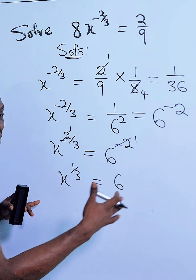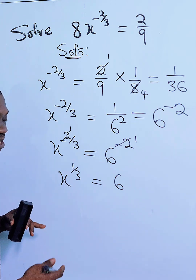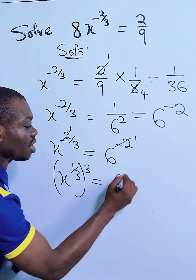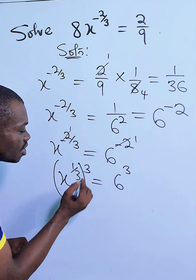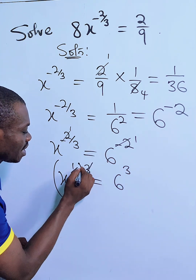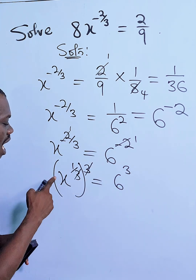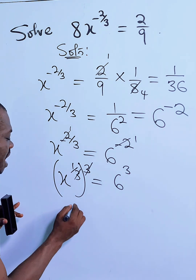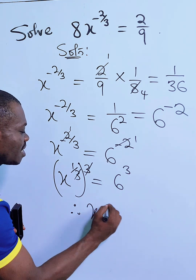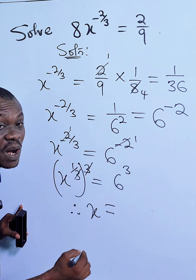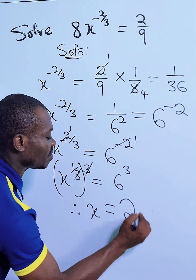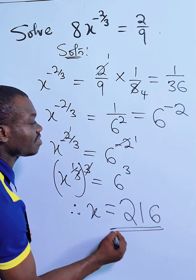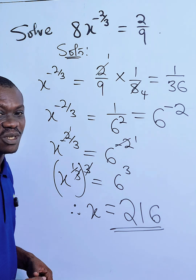I will now raise both sides to the power of 3. Why did I do that? So that I can clear out this fraction, and immediately my X will stand alone. Therefore, X is equal to 6 to the power of 3, which is the same thing as 216. And that is the solution.